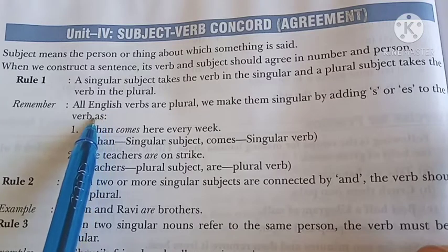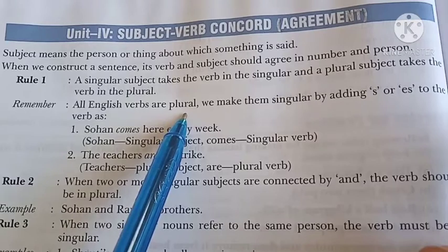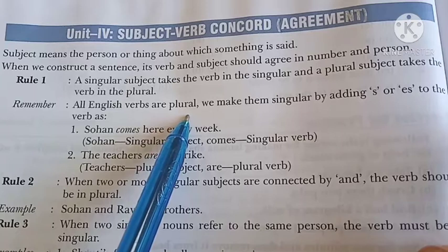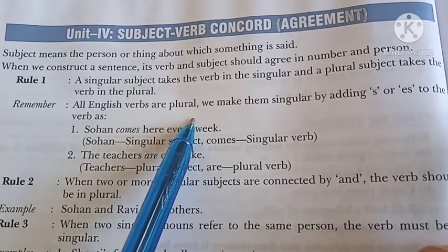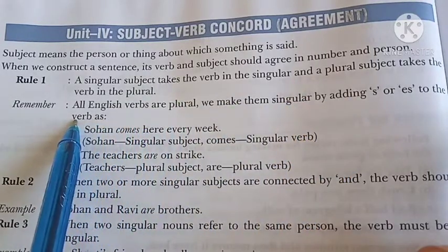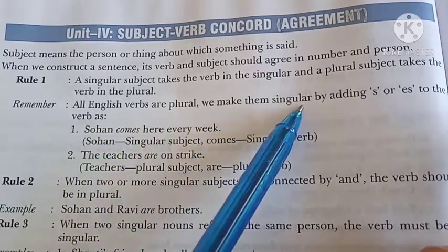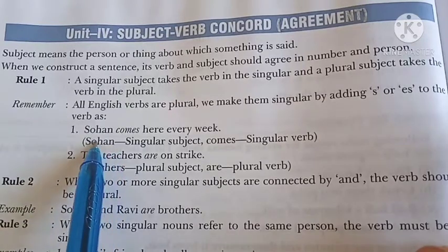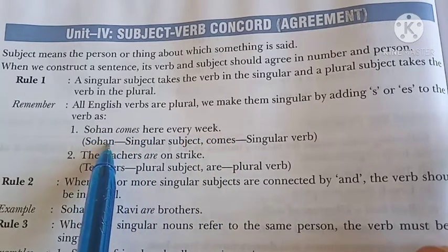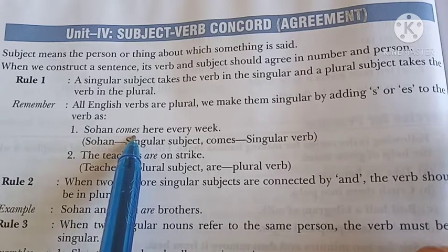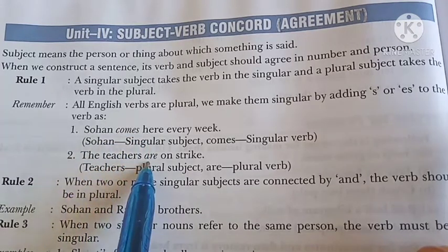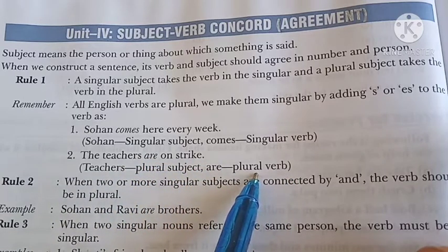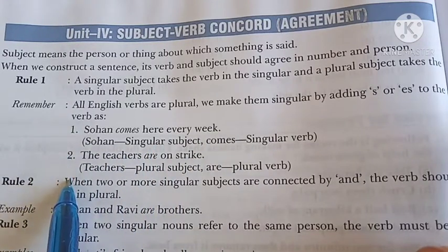Rule number one: a singular subject takes a singular verb, and a plural subject takes a plural verb. One important thing to remember is that all English verbs are plural in base form — for example: play, go, write, swim, jump, eat. To make them singular, we add S or ES. Example: 'Sohan comes here every week' — Sohan is singular, so it takes the singular verb 'comes.' 'The teachers are on strike' — teachers is plural, and 'are' is a plural verb.